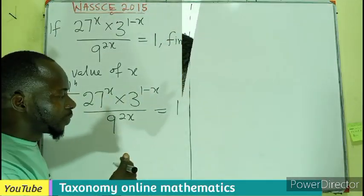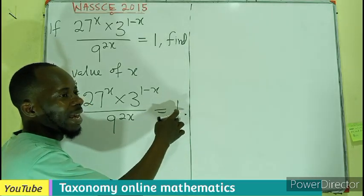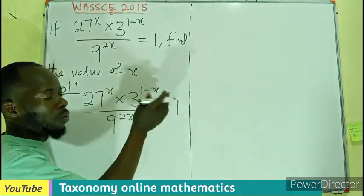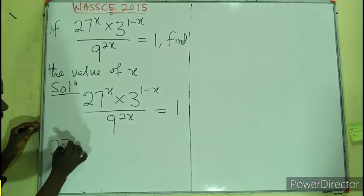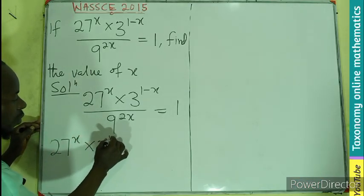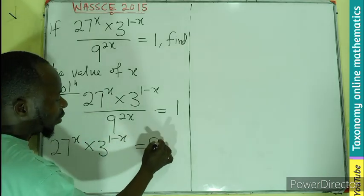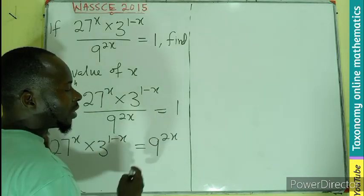You can see this is an equation with a denominator of 1. So we can cross multiply. That simply means we are left with 27^x × 3^(1-x) equals 9^(2x).